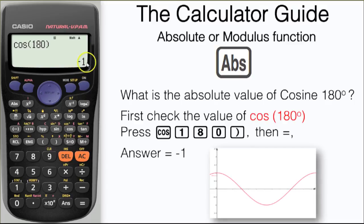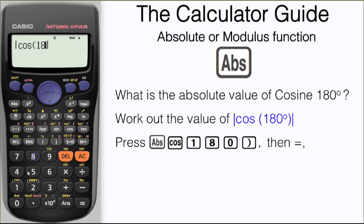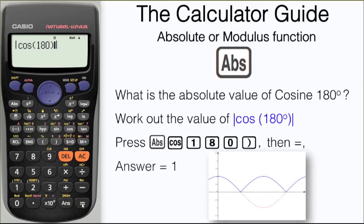We could have also found this from the cosine graph. Now let's try and input the absolute value of cosine 180 degrees. Press the abs button, then cosine 180, and don't forget to close your bracket. And here we have the answer of 1.